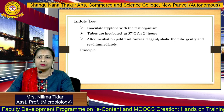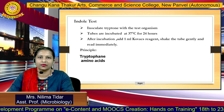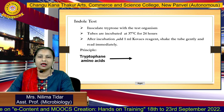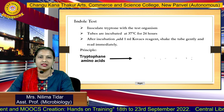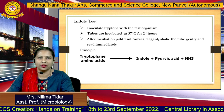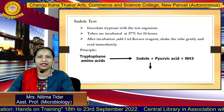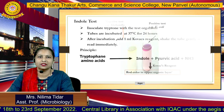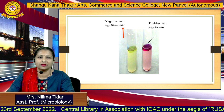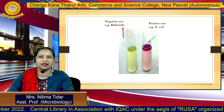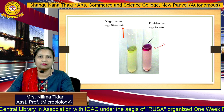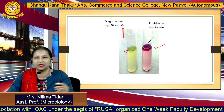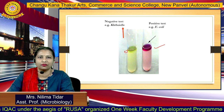The principle behind this particular test is as follows: tryptophan, the amino acid present in the medium, is broken down by the enzyme tryptophanase into Indole, pyruvic acid, and ammonia. This Indole can be detected by addition of Kovac's reagent. Pink color formation indicates a positive reaction, and no pink color indicates the absence of Indole formation.